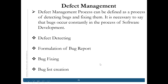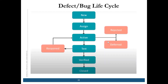Now coming to the defect life cycle. Once we are doing testing, we have to file a bug — that is a new bug. Then the next step is we assign it to some developer. Once we assign it to a developer, either that developer accepts the bug — it will become active because the developer has accepted it — or if the developer says it's not a bug, then he has the right to reject the bug, or it could be deferred.